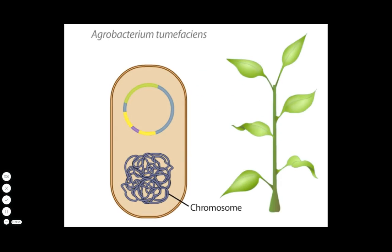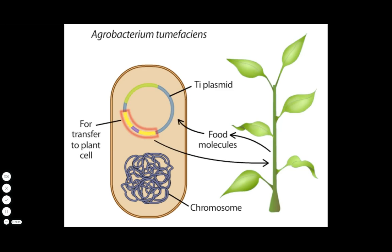The bacterium Agrobacterium tumefaciens is a natural genetic engineer of a wide variety of plants. The bacterium has a loop of DNA called a tumor inducing or Ti plasmid and can transfer part of this plasmid into a plant cell. The DNA transfer induces plant cells to make food molecules for the bacterium.